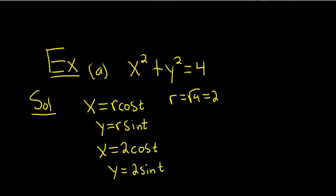And let's check. Let's actually plug it into this equation. So replacing x with 2 cosine t, we would get 2 cosine t squared plus, and then y is 2 sine t. So this is 2 sine t squared.